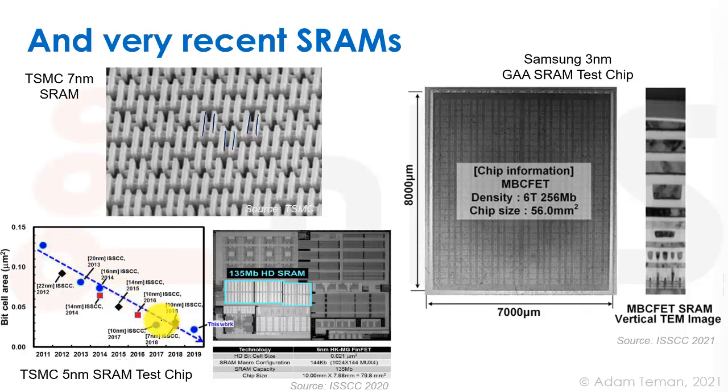Here you can see a five nanometer SRAM test chip that TSMC published. You can see the bit cell area that keeps on shrinking, which enables us to really keep Moore's law alive. Because if we want a tighter and a better functioning chip, we need to have smaller SRAM. You can see here that there's a 135 megabit high density SRAM that was done in five nanometer technology at ISSCC 2020. Samsung has recently published a three nanometer gate all around SRAM test chip.